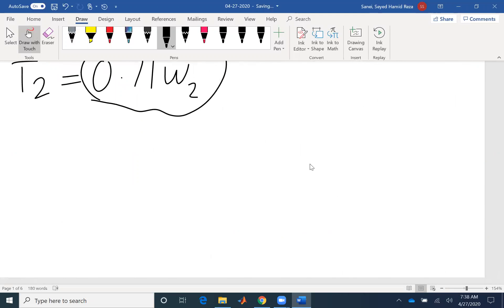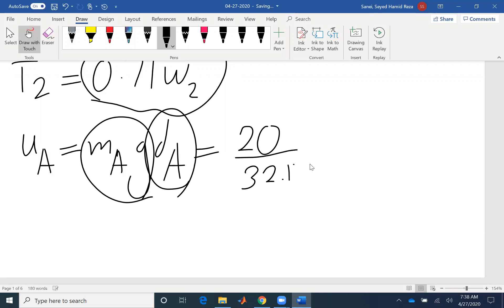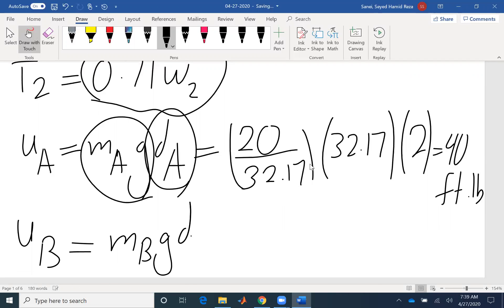So I have the displacement of A and B. So I come here. I write UA, which was MA G DA. It's positive because the force and displacement are in the same direction. So mass A was 20 divided by 32.17 to get the mass. But G is also 32.17. I write it in this way so you know what's happening. And it would be 2. So that would be 40 foot-pounds. And B would be MB G dB. But because the two are in opposite direction, I mean that the angle between the two is 180. So cosine of 180 would be negative 1 here. So the weight would be 30. And the movement is 1. So I have negative 30 foot-pounds.